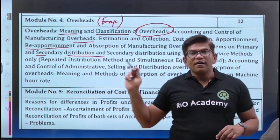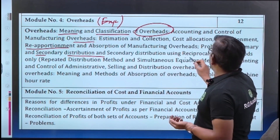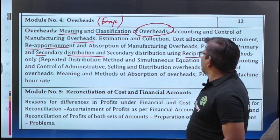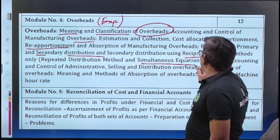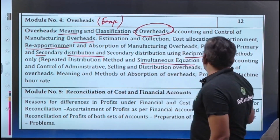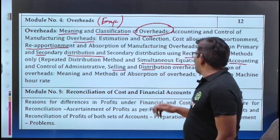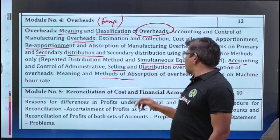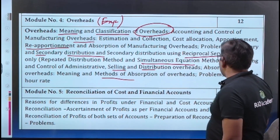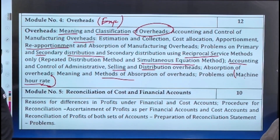We also have reciprocal service methods: the repeated distribution method and the simultaneous equation method, where we use specific formulas. Additionally, we cover accounting and control of administration, selling and distribution overheads, absorption of overheads — meaning and methods — and problems on machine hour rate overhead, which is another important and completely new concept in this chapter.